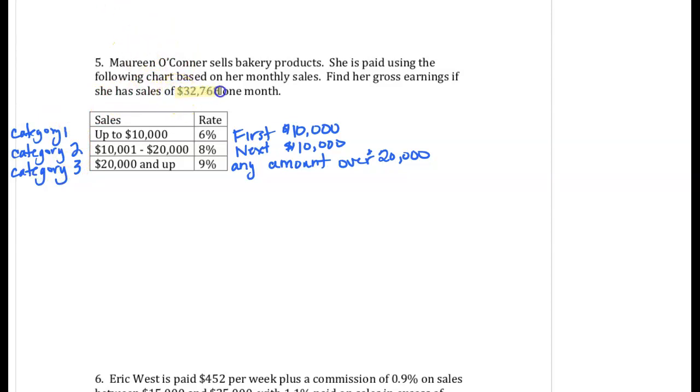If our person has sales of $32,768, they're for sure going to have sales in the first category because they've sold at least $10,000 in products. They're also going to have Category 2 and commission in that category because they're at least in the $20,000 category. And they're actually going to also have sales in the third category because their sales for the month go above the $20,000. So in Category 1, there is $10,000. All $10,000 of Category 1 get paid at 6%, which as a decimal is 0.06 for a total of $600 commission in Category 1.